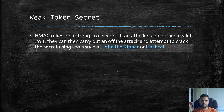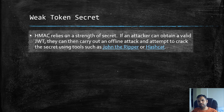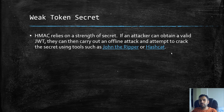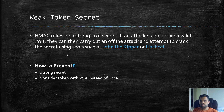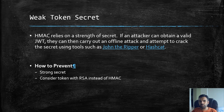Weak token secret: HMAC may seem secure but it's not always sufficient. If an attacker obtains a valid JWT, they can carry out an offline attack and attempt to crack the secret using tools like John the Ripper or Hashcat. Use a strong secret — OWASP has a full list of guidelines — and consider using RSA instead of HMAC, which is much stronger and more reliable.